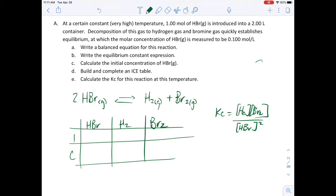The question says that at a certain constant very high temperature, 1.0 mole of hydrogen bromide is introduced in a two liter container. So its concentration is going to be equal to 1.00 mole divided by a 2.00 liter container, so it's going to be 0.500 mole per liter.